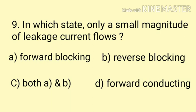Question number nine: In which state only a small magnitude of leakage current flows? Option A: forward blocking, Option B: reverse blocking, Option C: both A and B, and Option D: forward conducting. In forward blocking state, junction J1 and junction J3 are forward biased whereas junction J2 is reverse biased, so a small magnitude of leakage current flows through the middle junction.